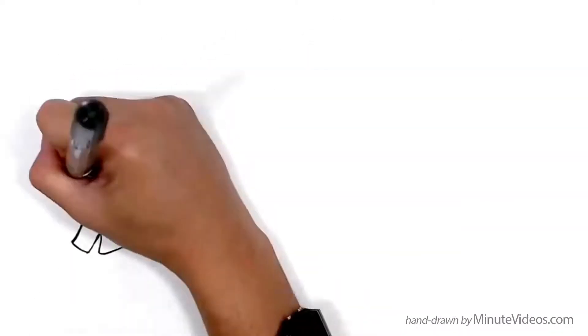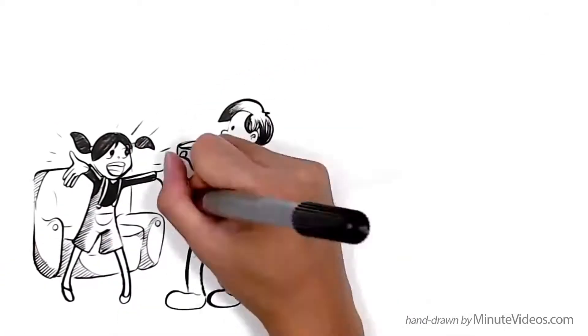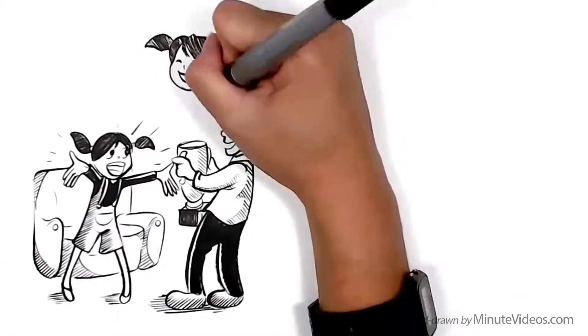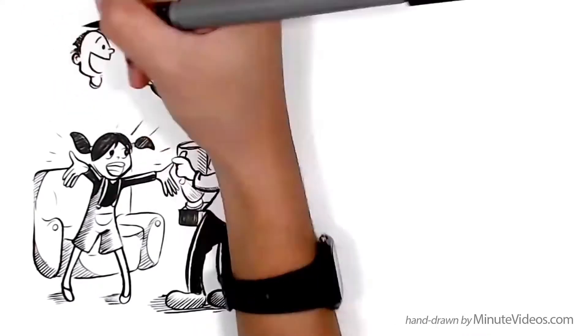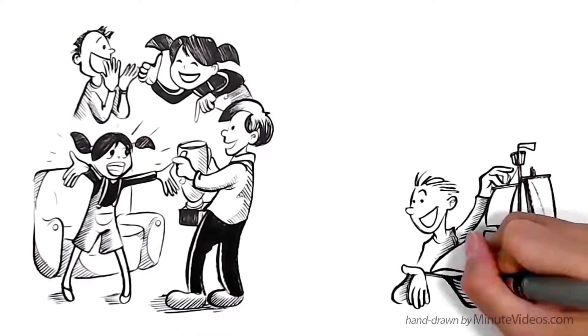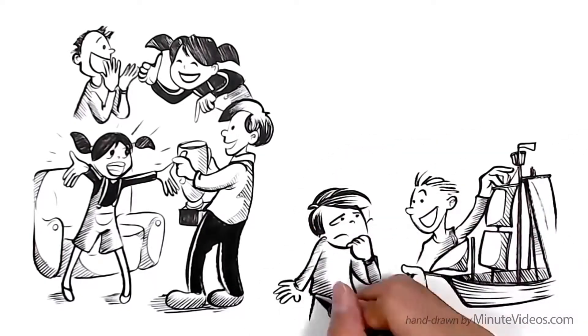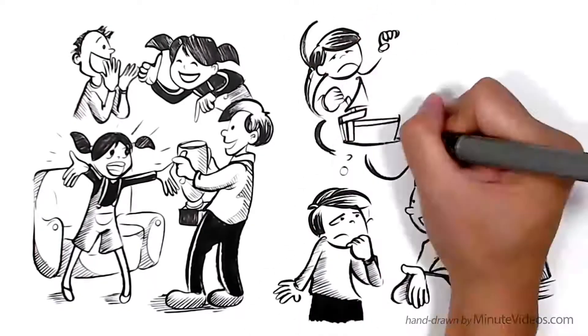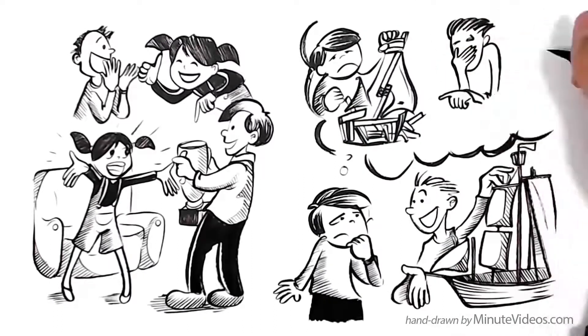Ann likes to see others succeed. It inspires her. She knows that if she motivates her friends to get better, she herself is likely to grow too. If his friends try new things and succeed, Jay feels threatened. He's afraid that their success will put pressure on him to do more with his life too.